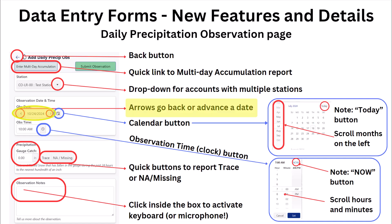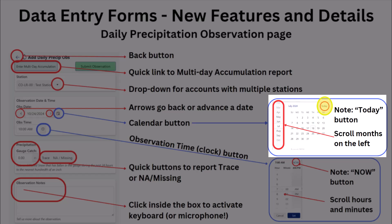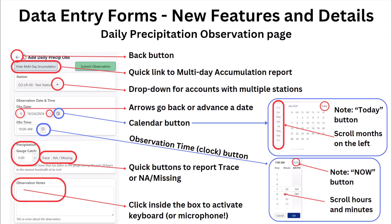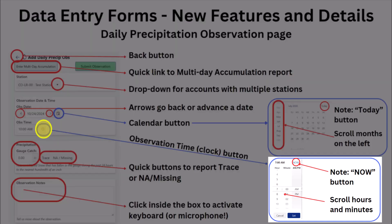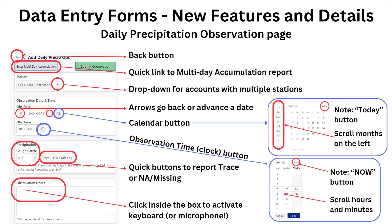For the date and time section, there are toggles to advance or retreat a day at a time, or you can click on the calendar icon to select a day from the calendar. The calendar also has a today button that will automatically fill in the current day if needed. The observation time also has an icon, and if you click on it, you can adjust your time of observation, and there is a now button that will automatically fill in the current time. For your precipitation field, it defaults to zero, but you can click in the field to open your keypad, or click the trace or NA/missing button to quickly enter a trace or NA if needed.